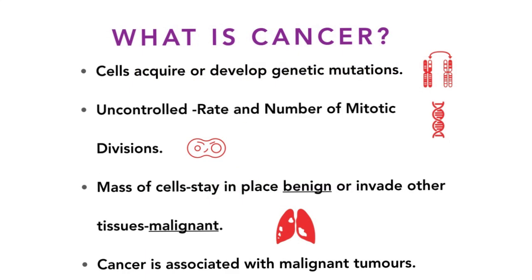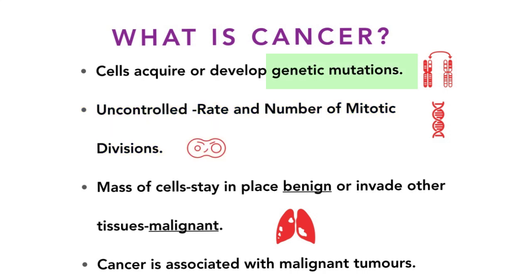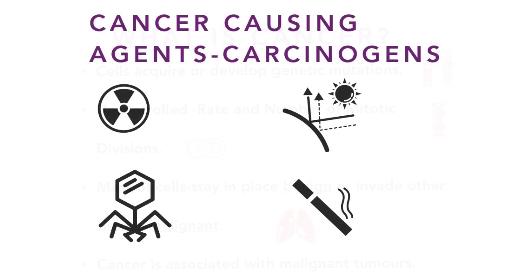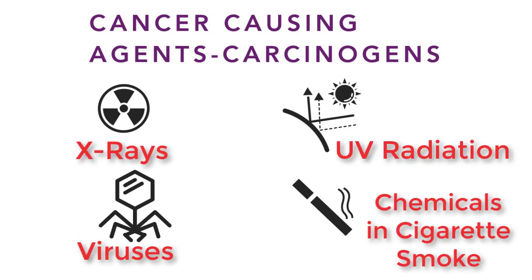What is cancer? Cancer is when mitosis is happening too fast and too often in certain cells — the rate and number of mitotic divisions is uncontrolled. This can happen when cells acquire genetic mutations and mitosis goes uncontrolled. These cells divide to form a mass known as a tumour. If they stay in place they're classed as benign, but if they invade other tissues they're termed malignant, and malignant cells are associated with cancer. Cancer-causing agents are known as carcinogens — key examples include X-ray radiation, UV radiation, certain viruses, and the chemicals in cigarette smoke.